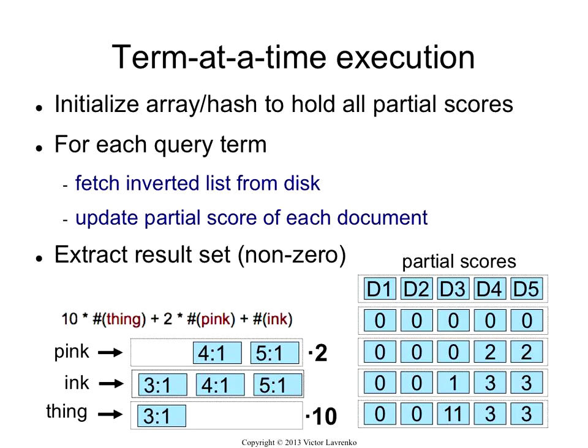So document 3 gets a score of 11. So what you're doing is you take a term, update all the documents based on the inverted list of that term, and then move on to the next term. You are computing the scores in no particular order, and that's a critical thing when we talk about optimizations. You can also process the terms in any given order, so that's another nice thing.